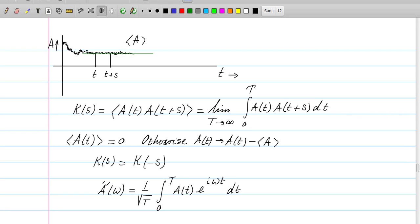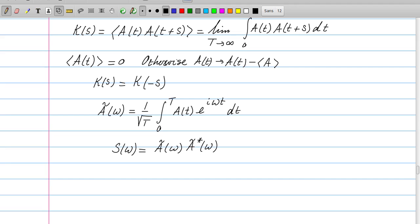We define the Fourier transform of A(t), and the Fourier transform is indicated with a wiggle. It has as a variable the omega, and it is an integral of 0 to T, A(t) e to the power i omega t dt, and the pre-factor is 1 over square root of T. There is always some freedom in choosing this pre-factor. It's convention in this field to use 1 over square root of T in front of the integral for the Fourier transform. Of particular interest is the quantity S(omega), which is defined as the product of a Fourier transform times its complex conjugate. And this is called the power spectrum.